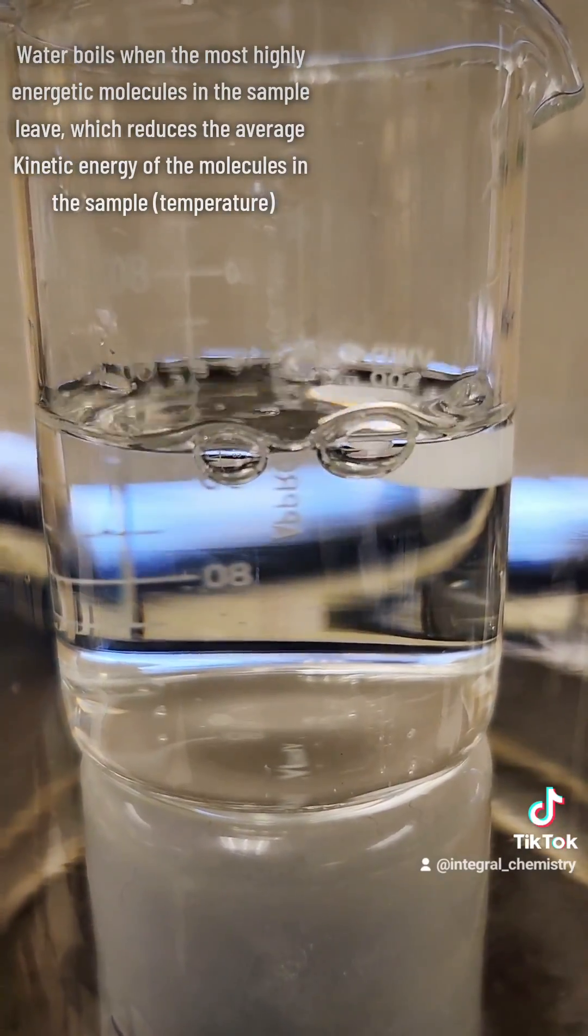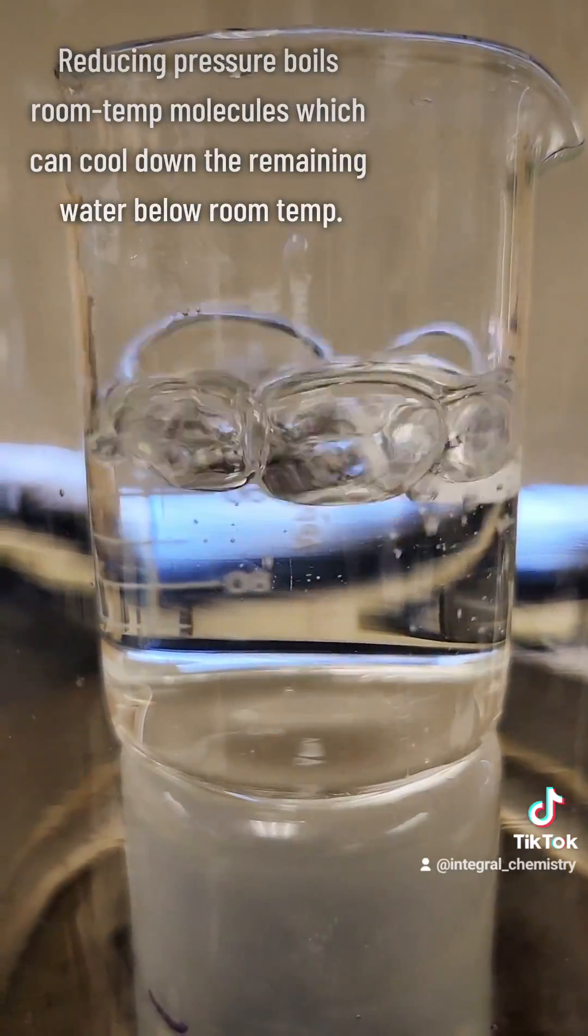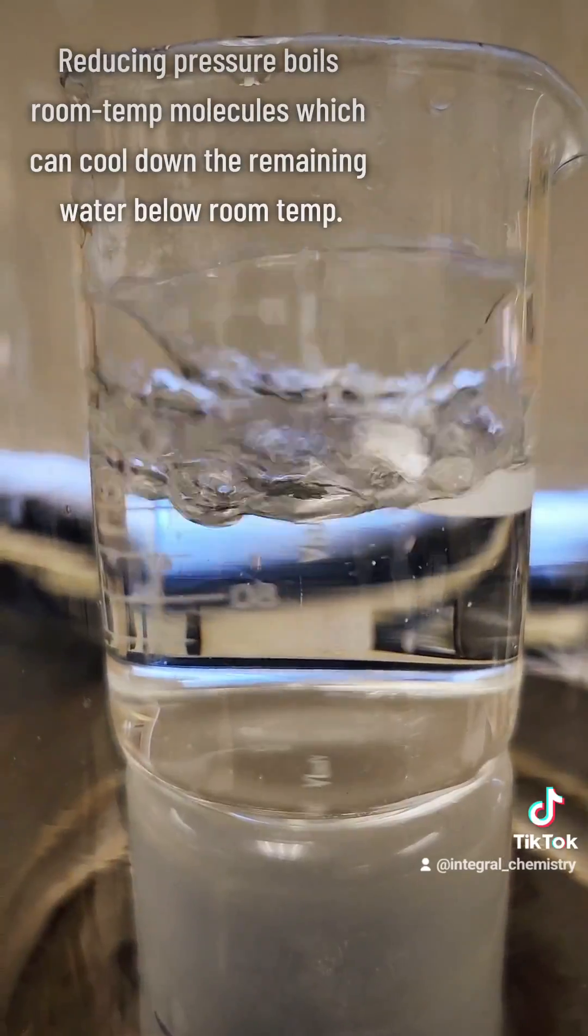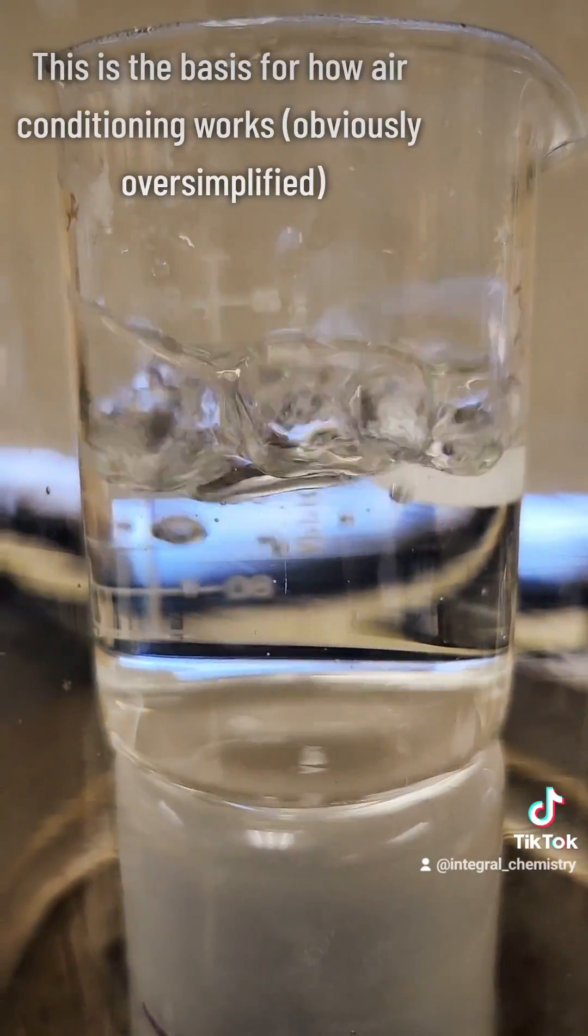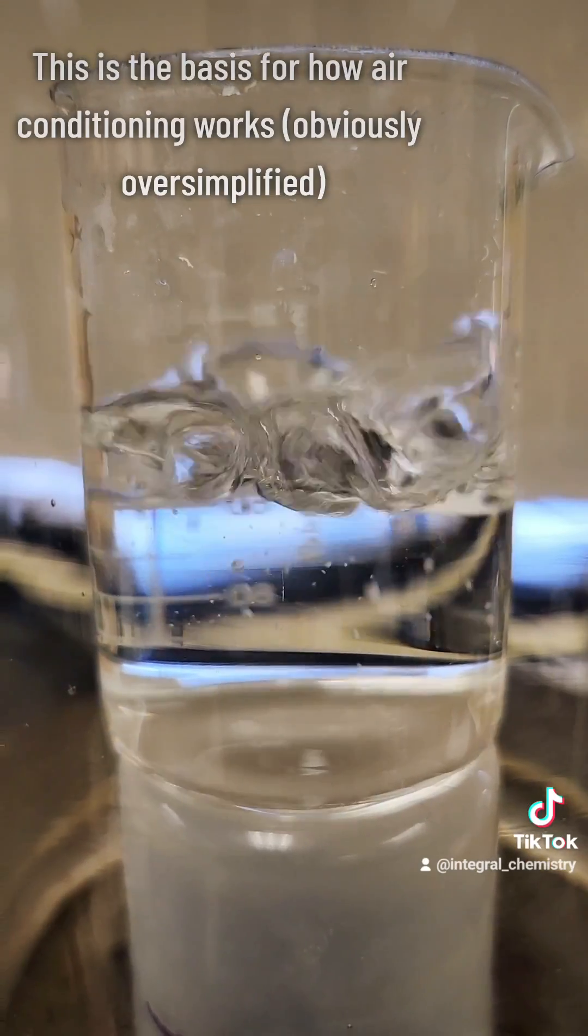By using a vacuum at room temperature to get rid of the higher energy molecules, the ones left behind in the beaker can be cooled below room temperature. It's really oversimplified, but this is basically how cooling air by compression works.